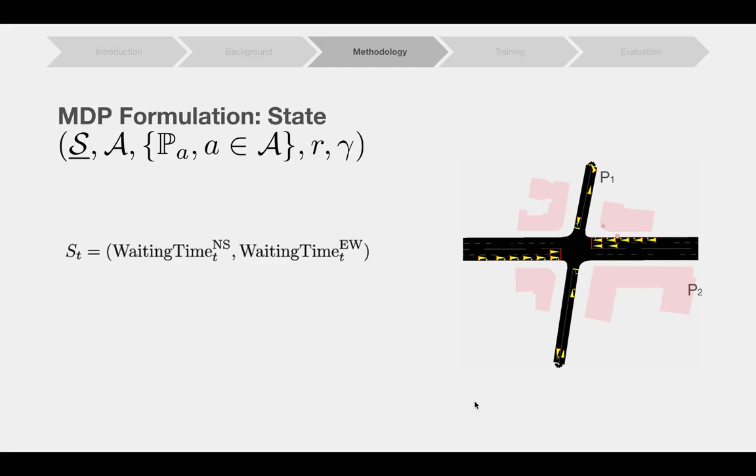north-south itself during the last cycle, which is yellow. And the second entry is the total waiting times experienced by other vehicles in the incoming approaches for phase 2 east-west during the last cycle, which is red.